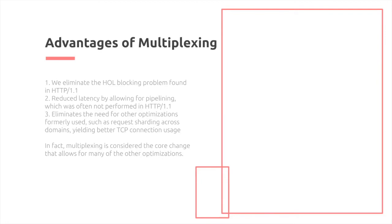We eliminate the head-of-line blocking problem found in HTTP 1.1, reduce latency by allowing for pipelining (which was often not performed in HTTP 1.1), and eliminate the need for other optimizations such as request sharding across domains. This yields better TCP usage. Previously, web browsers often restricted the number of TCP connections to around 5 to 6 per origin. To bypass this, some websites performed domain sharding — making HTTP connections to separate domains, resulting in extra DNS requests and increased latency. None of this is needed anymore. Additionally, since TCP connections may have slow start, reducing connections improves performance even further.